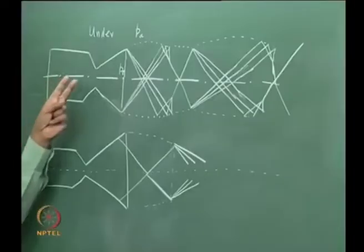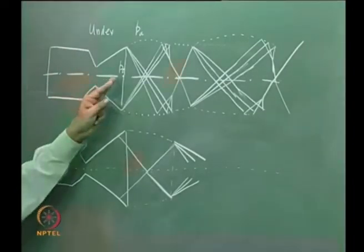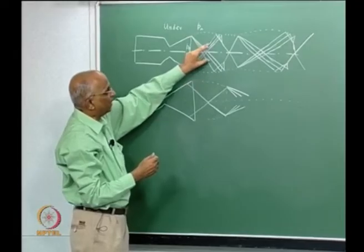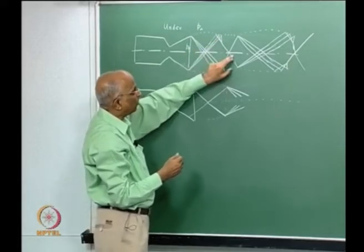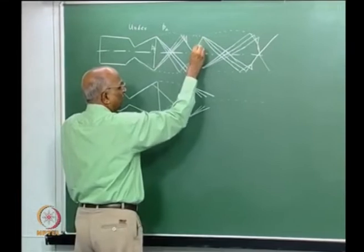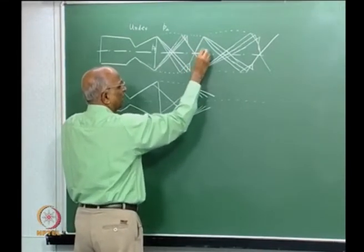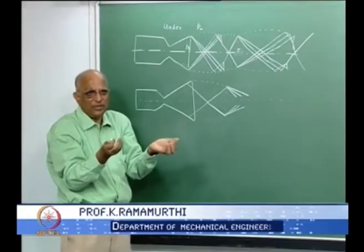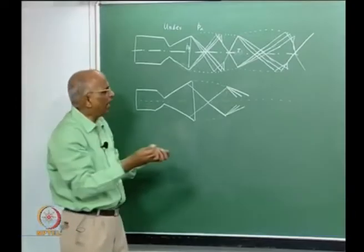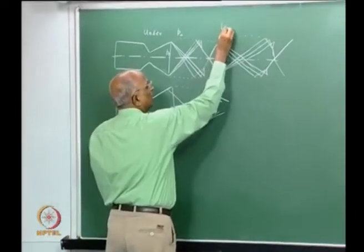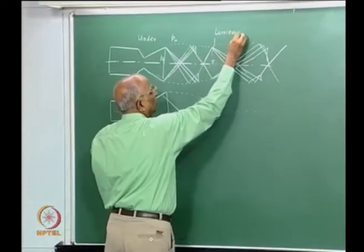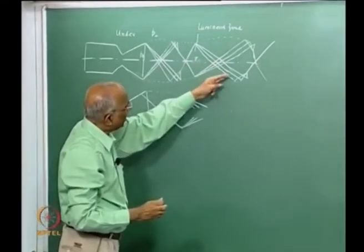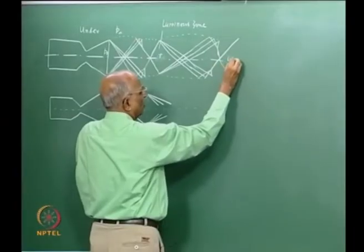Therefore, when I look at an under-expanded jet, I start with a high value of Pe. I get first a set of expansion fans which are followed by an oblique shock wave, and behind the oblique shock wave, since I have higher compression, I get a higher temperature region. This higher temperature region shows up as light — anything at higher temperature emits more light — and this is seen as a luminous zone. And again I have a rarefaction fan, again compression, again another luminous zone.